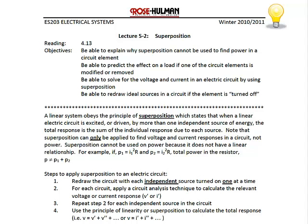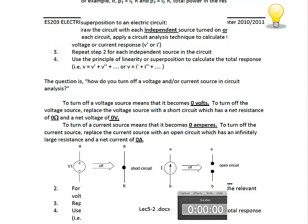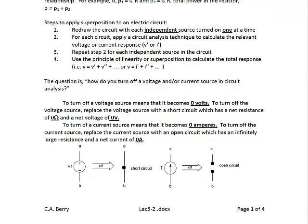For example, V would be equal to V prime plus V double prime, or I would be equal to I prime plus I double prime. If you do need to find the power in the circuit, you would first sum the voltages, sum the currents, get the final answer for the voltage or current, and then do V times I, I squared R, or V squared over R. As a brief review, remember to turn off a voltage source, you replace it with a short circuit so that it becomes zero volts.